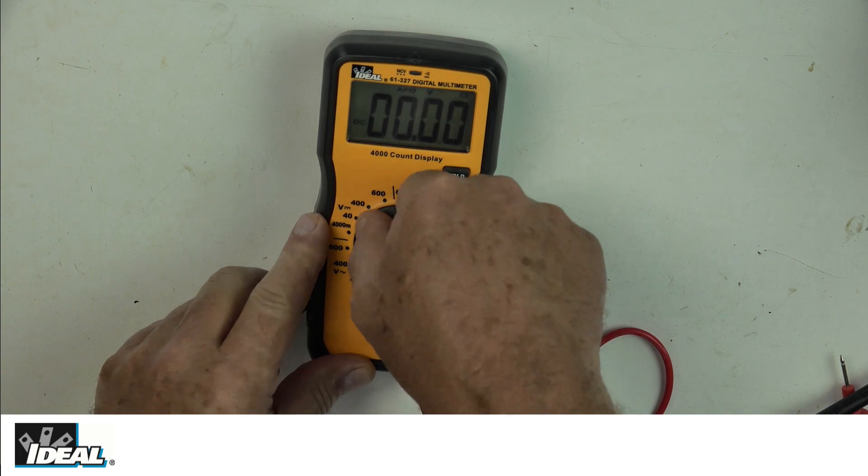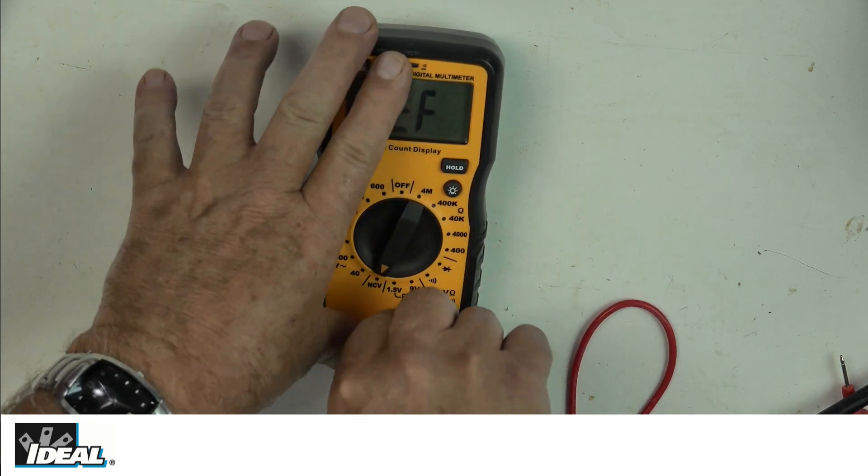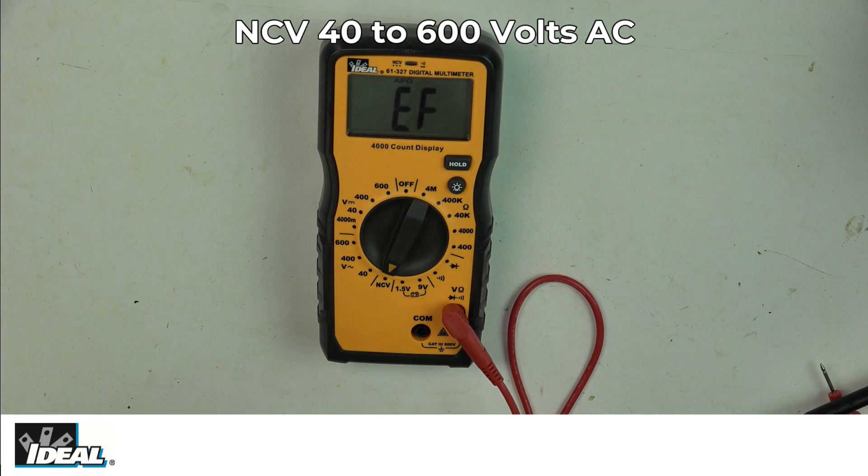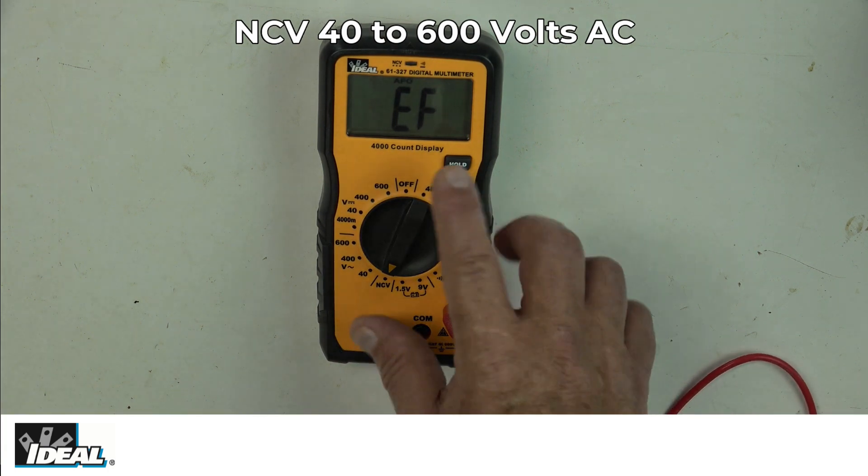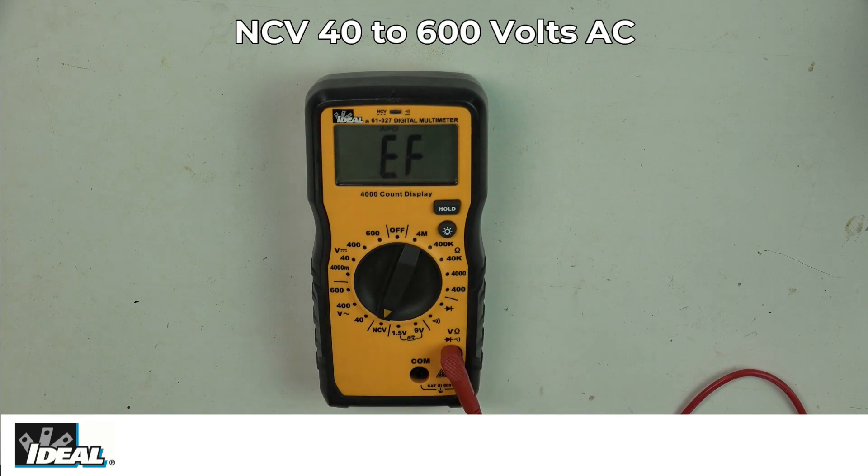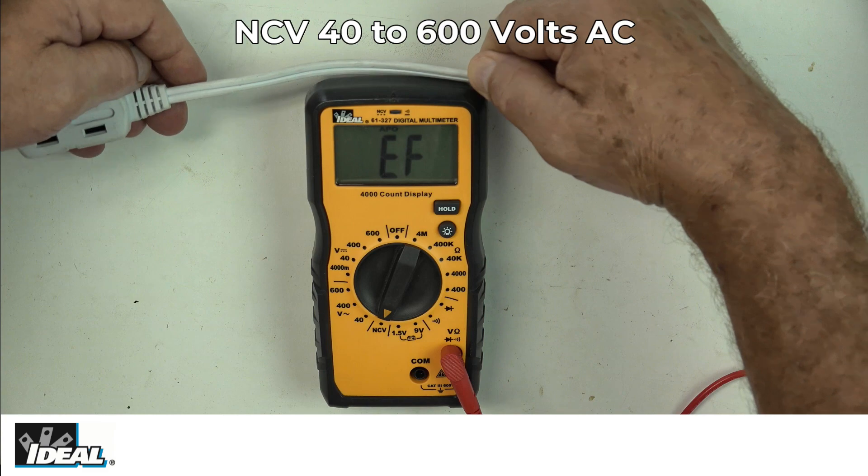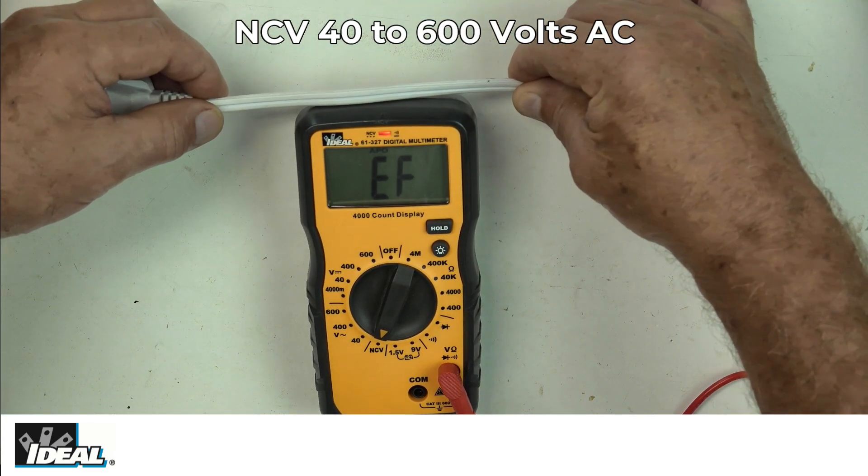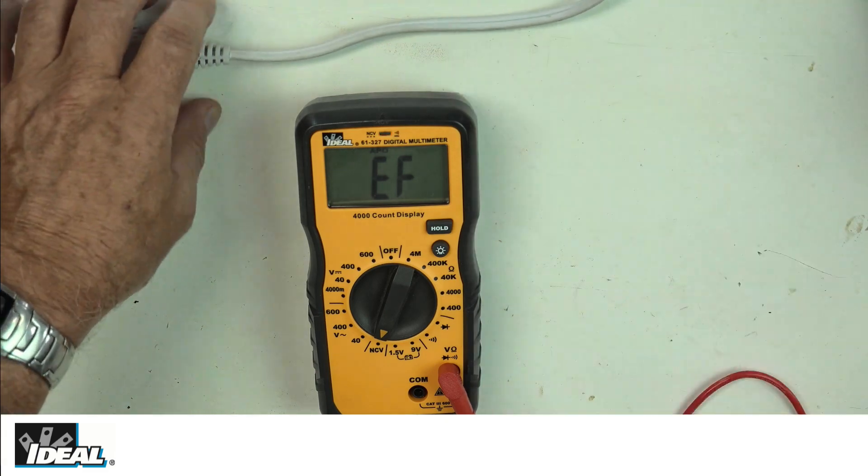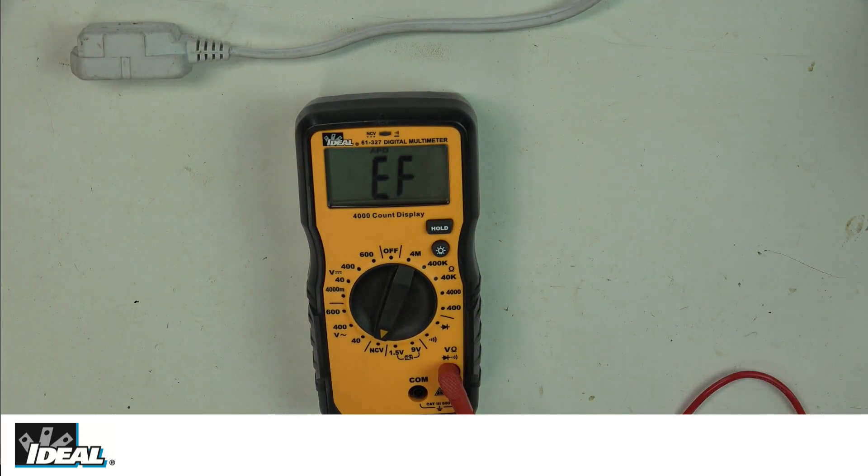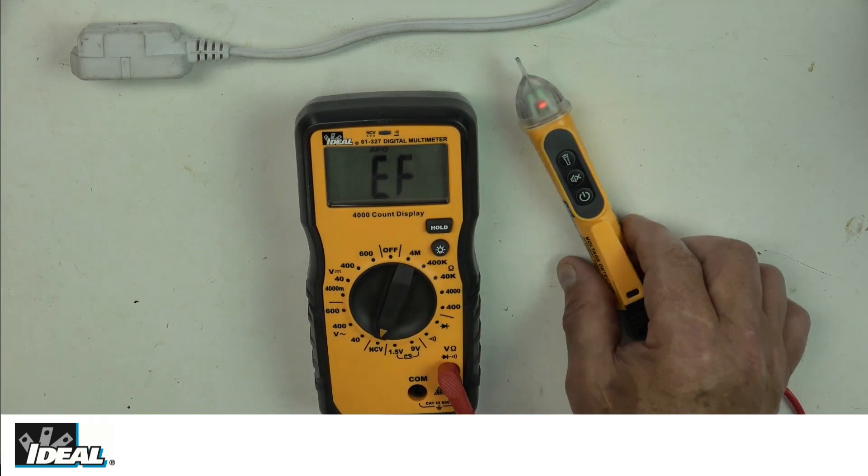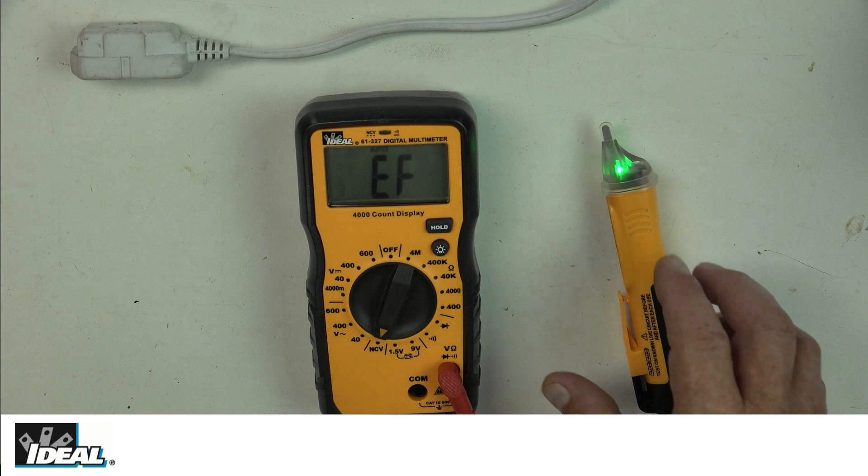The tester also has non-contact voltage sensing capabilities. I'm going to take the black lead out of the tester. You notice the tester says EF on it. If I run a test cord across the back of this tester, it is indicating there is voltage in the cord. But I'm going to tell you that the non-contact voltage sensing capabilities of these kinds of testers versus one of these little voltage sticks is quite a bit different.